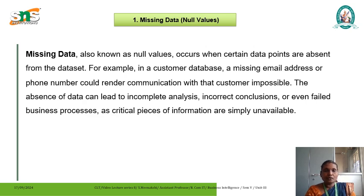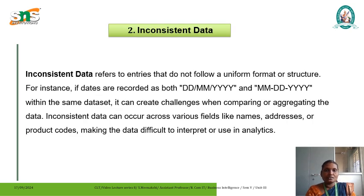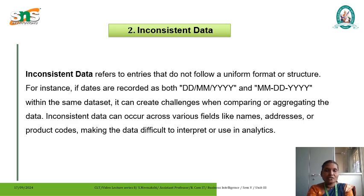The second kind of error is inconsistent data. This kind of error happens when you maintain records or data inconsistently — entries do not follow a uniform format or structure. For instance, if dates are recorded as both date-first then month-first within the same data set, it can create challenges when comparing or aggregating the data. Inconsistent data can occur in various fields like names, addresses or product codes, making the data difficult to interpret or use in analytics.